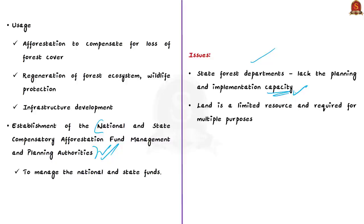The second problem is procuring land for compensatory afforestation. This is quite difficult because land is a limited resource required for multiple purposes such as agriculture and industry. Overall, while making efforts to conserve and develop forests through afforestation, all these factors should be taken into account. This discussion covered the Compensatory Afforestation Fund, the meaning of compensatory afforestation, CAMPA and the ad hoc CAMPA, and issues in utilizing accumulated funds under CAF.